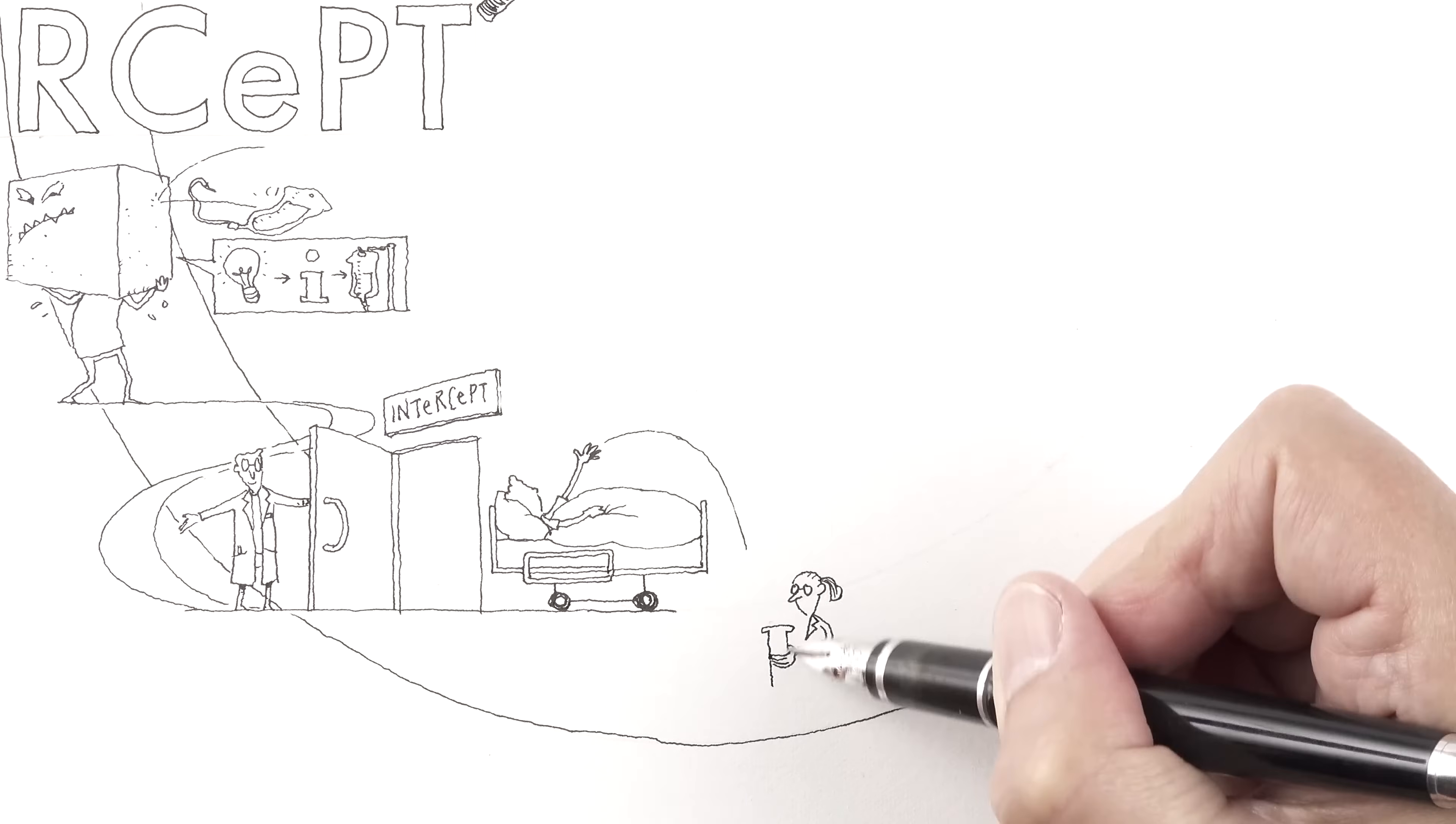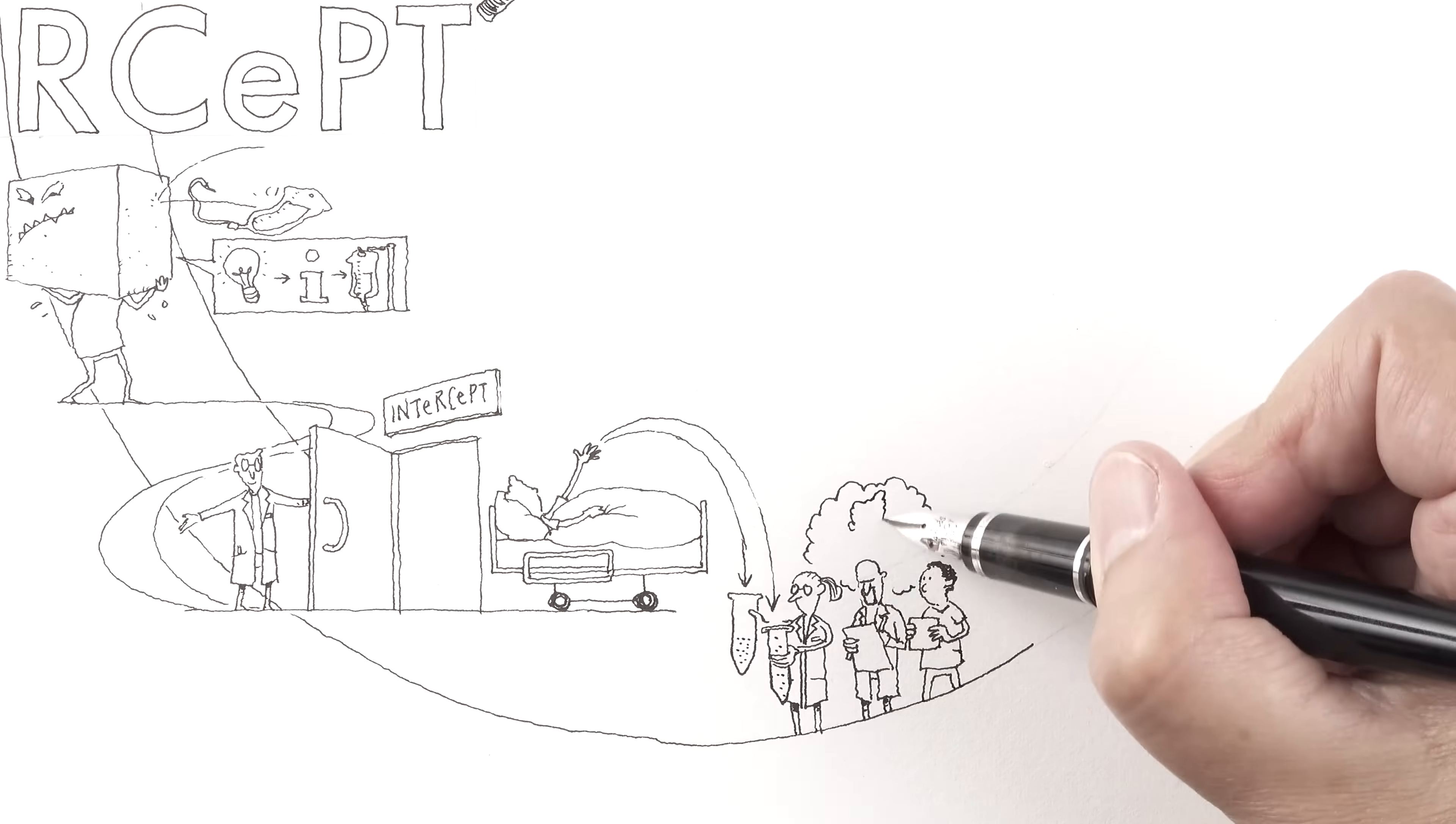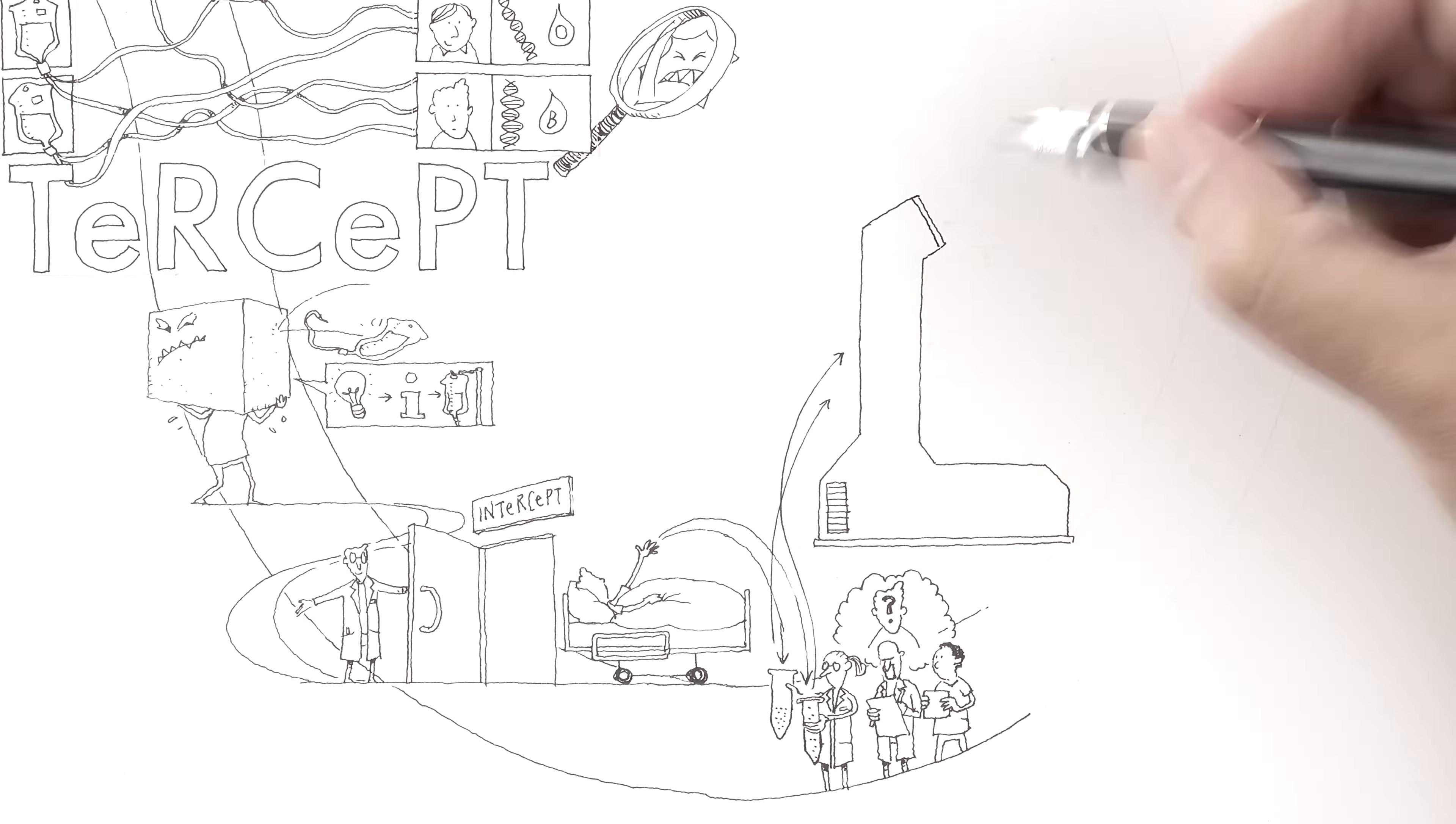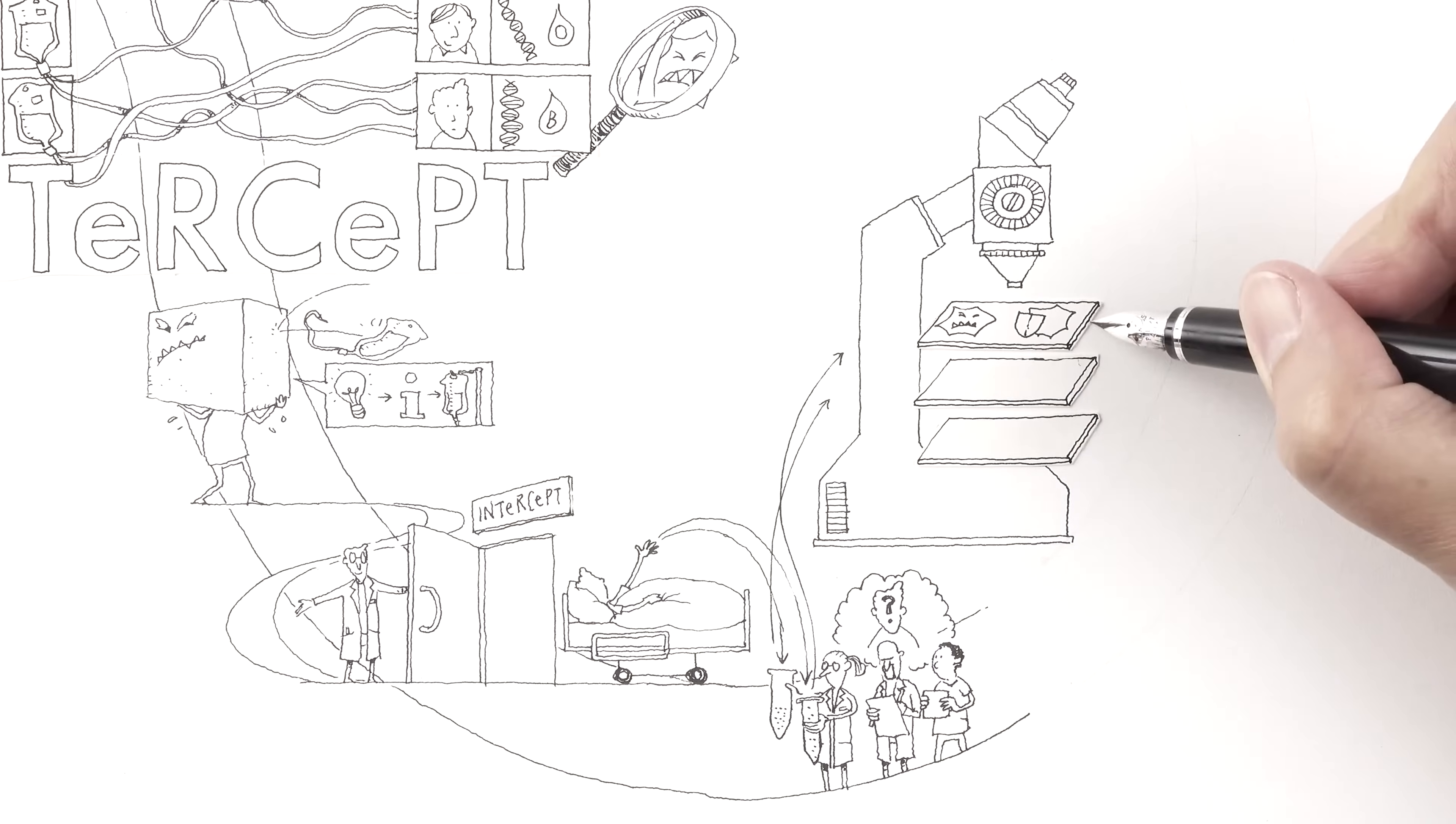The Intercept team is working tirelessly with the collected blood and tissue samples to understand David's specific situation. In parallel with David's treatment in the hospital, his tumor cells as well as healthy immune cells are being analyzed in the laboratory for their molecular characteristics.